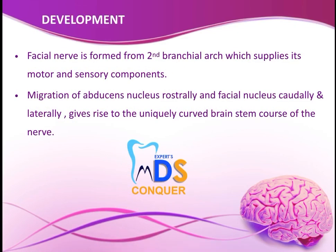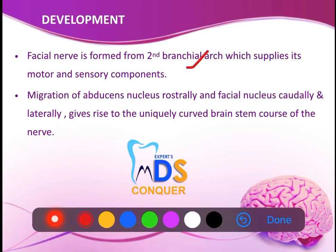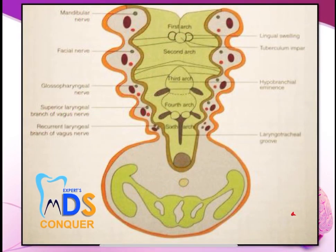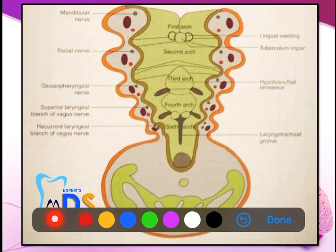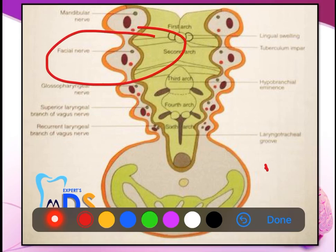Coming to the development part, you have to write that it is from the second branchial arch — that's very important. It supplies both motor and sensory components. You can draw a diagram for this; diagrams are equally important because no one has very good time to read every line. Give importance to headings, important lines, and diagrams — especially for anatomy subjects, it will be very scoring. Draw the simple diagram and highlight where the facial nerve lies with the second branchial arch. If you can draw all the others also, it's even more scoring, but drawing the outline and highlighting the facial nerve is more than enough.